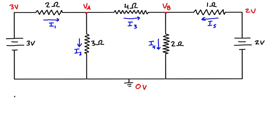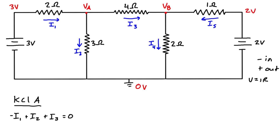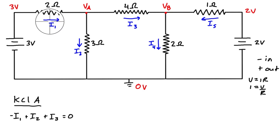Let's write KCL for node A first. We can either sum currents flowing in on one side and currents flowing out on the other, or we can use the convention where currents flowing in are negative and currents flowing out are positive, so they sum to zero. Using that convention: because i1 is flowing in we have negative i1, then i2 flowing out gives plus i2, and plus i3, all equal to zero. Using Ohm's law, current equals voltage over resistance, so we can express each unknown current in terms of the voltage drop across the element.